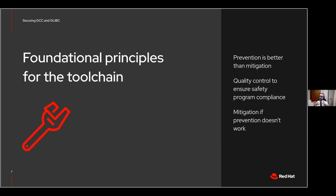Looking at the past led us to three foundational principles. First, prevention is better than mitigation — if we can prevent issues or provide a higher quality FOSS toolchain, then downstream customers won't have to schedule downtime, reboot, or do upgrades because of CVEs. In the middle, we have quality control to ensure the compiler flags, safety, ABI, and everything we want are all in place as expected. And mitigation is there if prevention doesn't work.